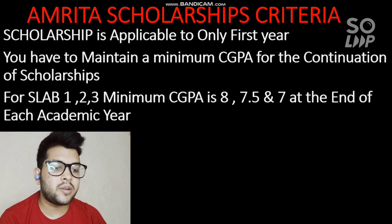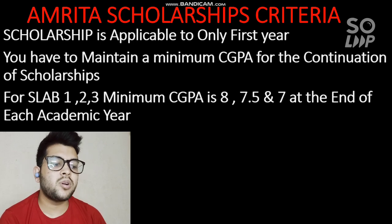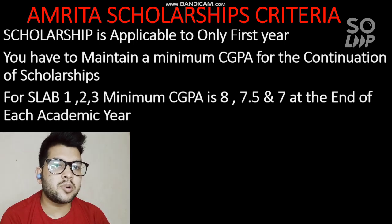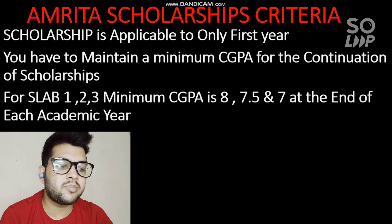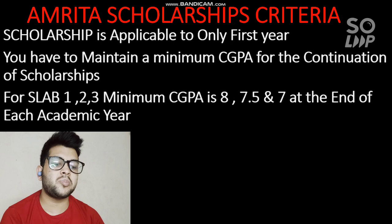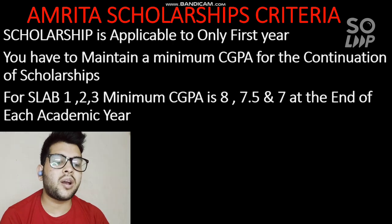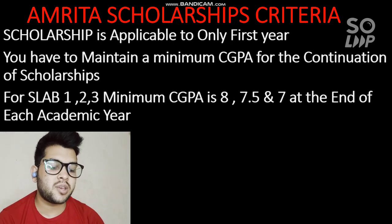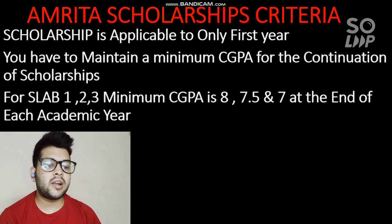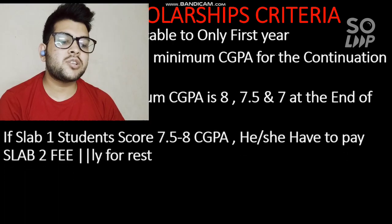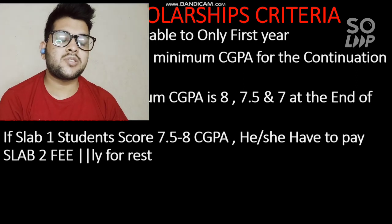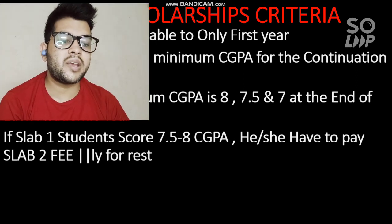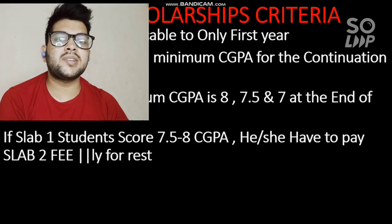For Slab 2, a minimum 7.5 CGPA is required, and for Slab 3, a minimum 7 CGPA is required, after each academic year. If a Slab 1 student scores between 7.5 and 8 CGPA — meaning they fail to reach 8 or above — then they have to pay the Slab 2 fee from second year.